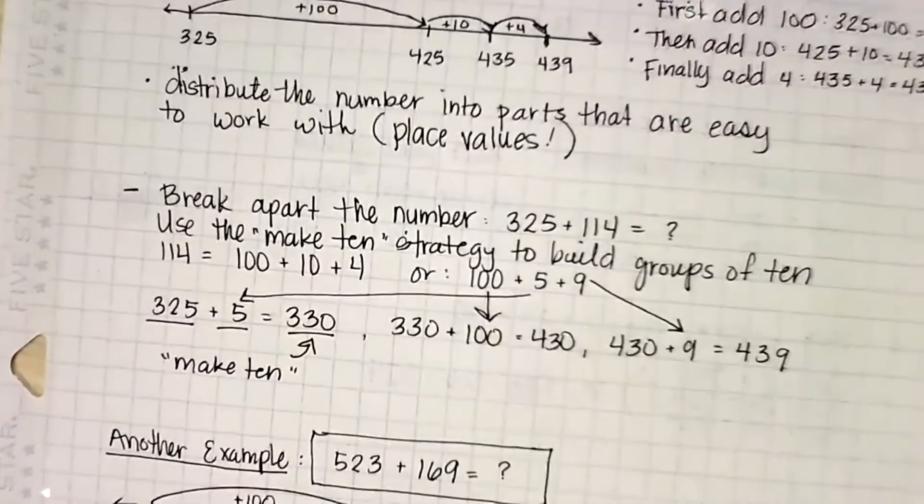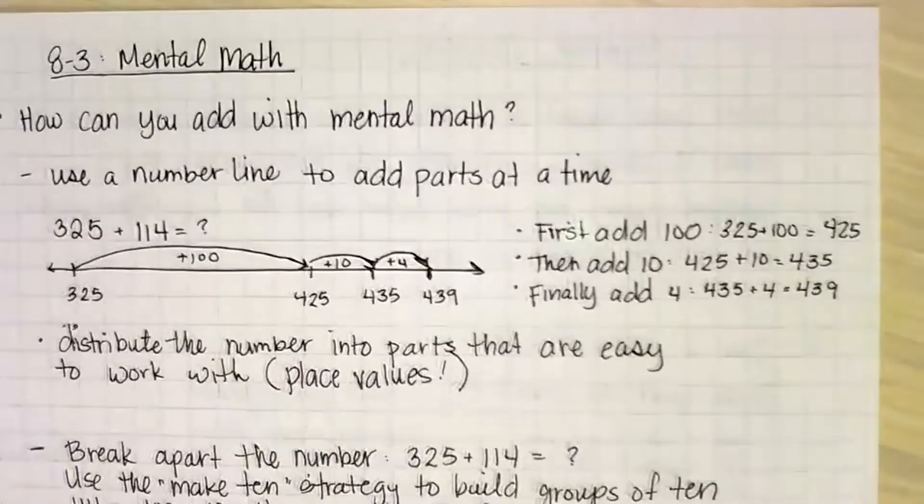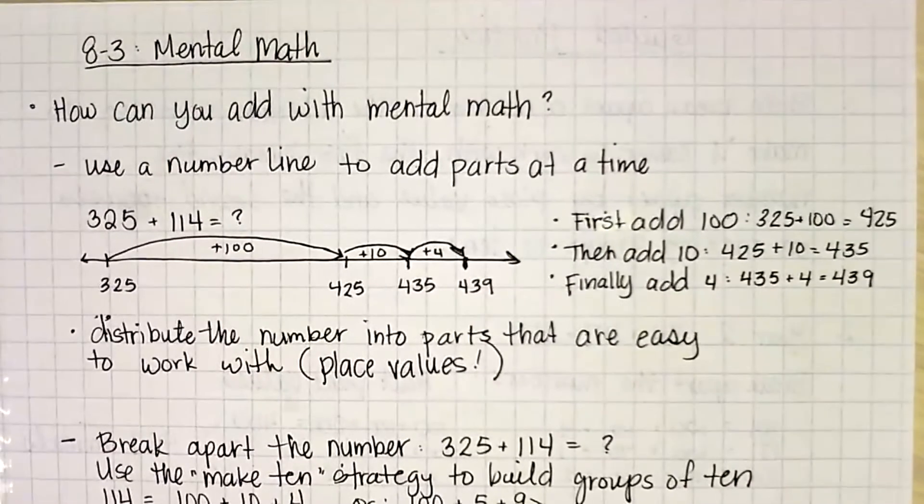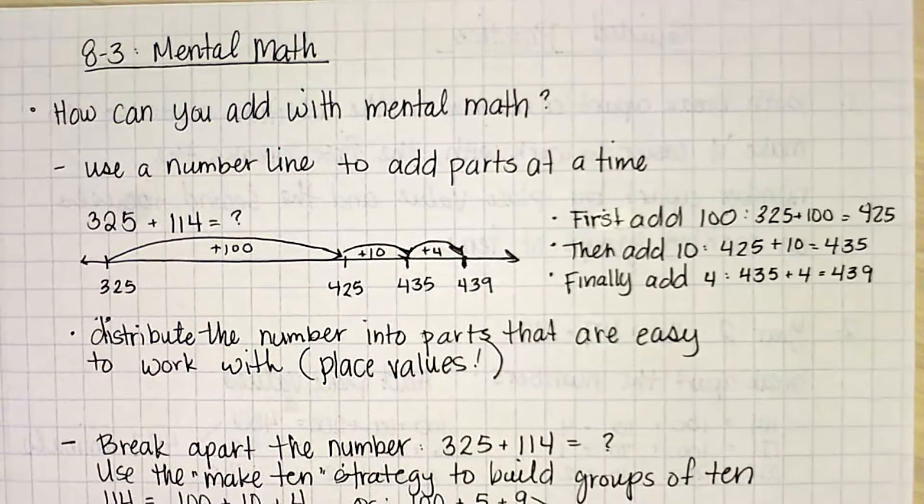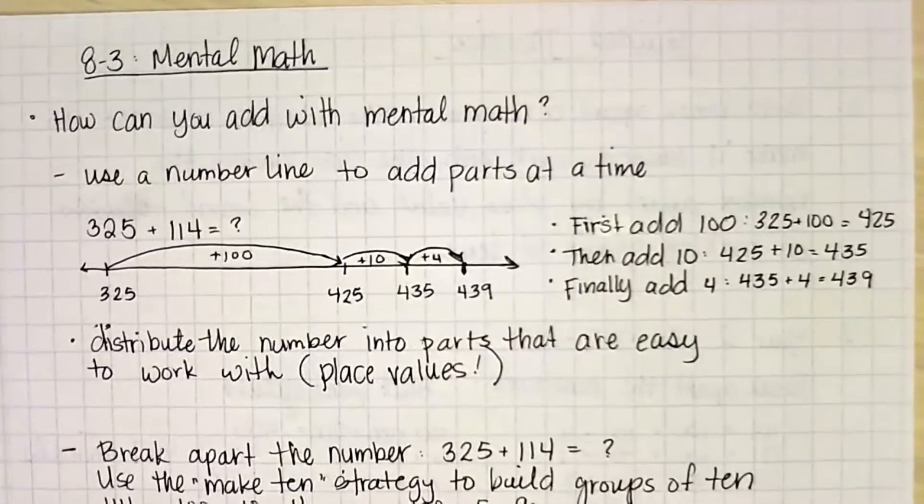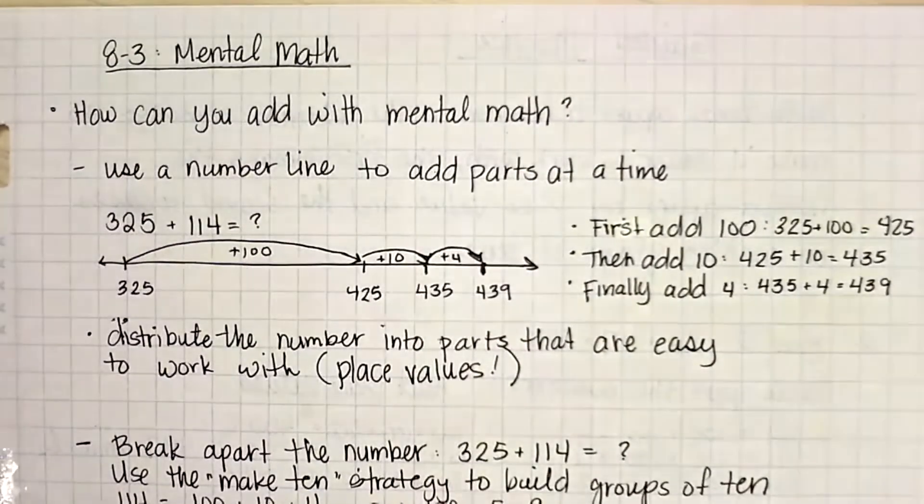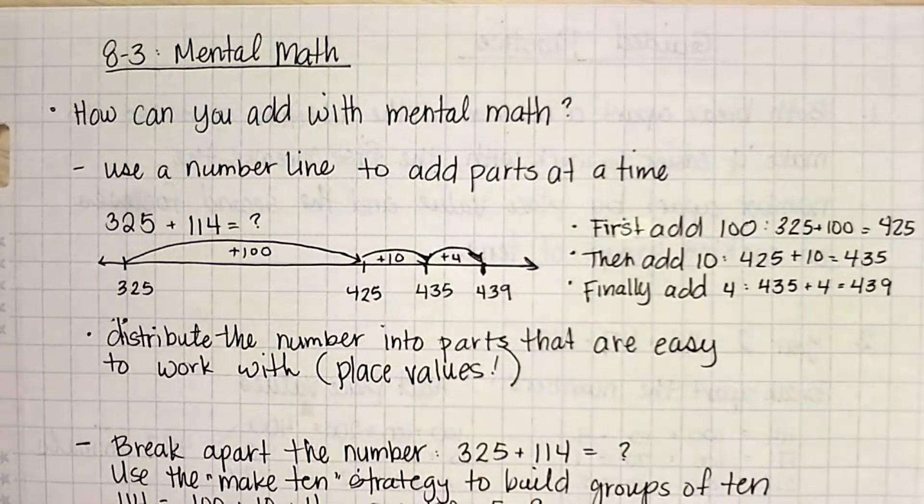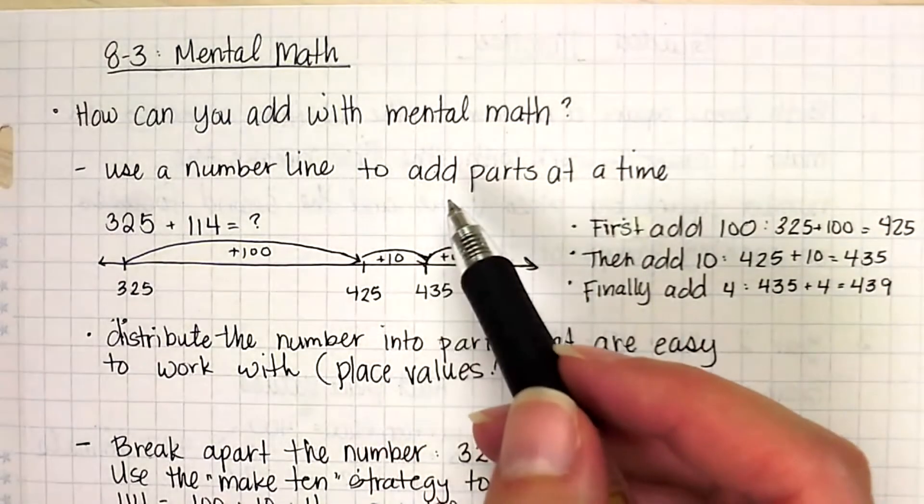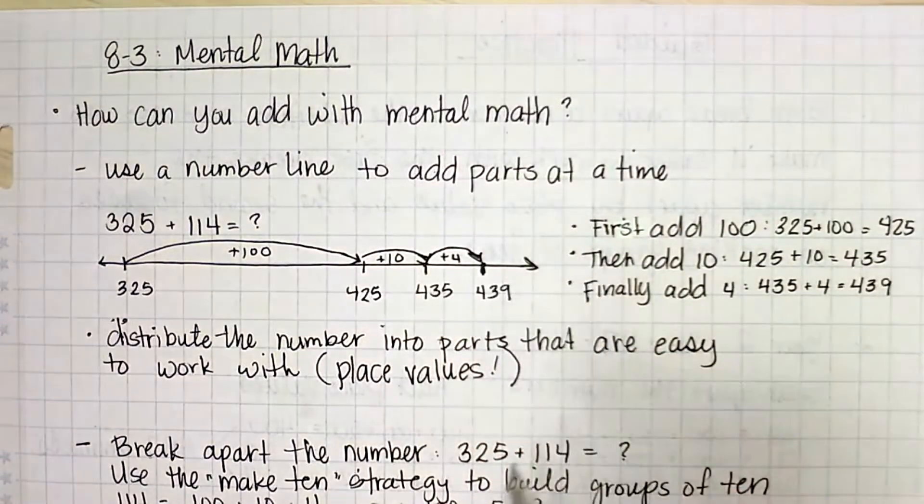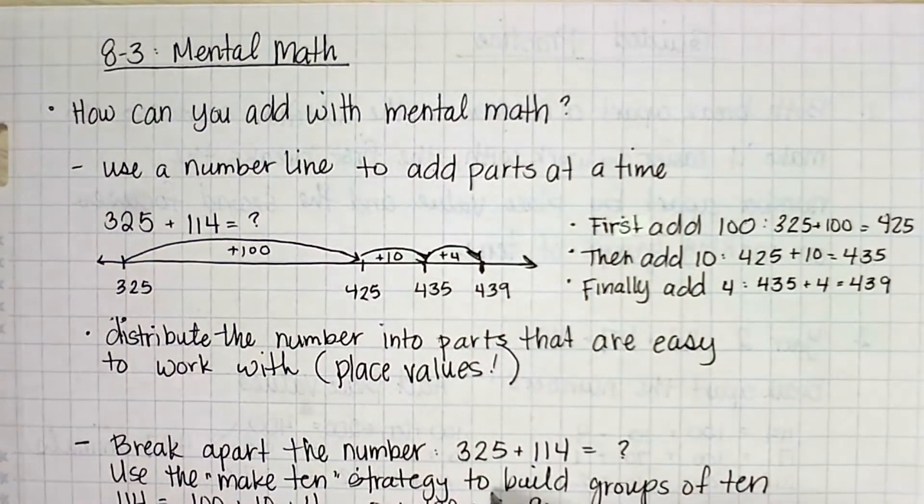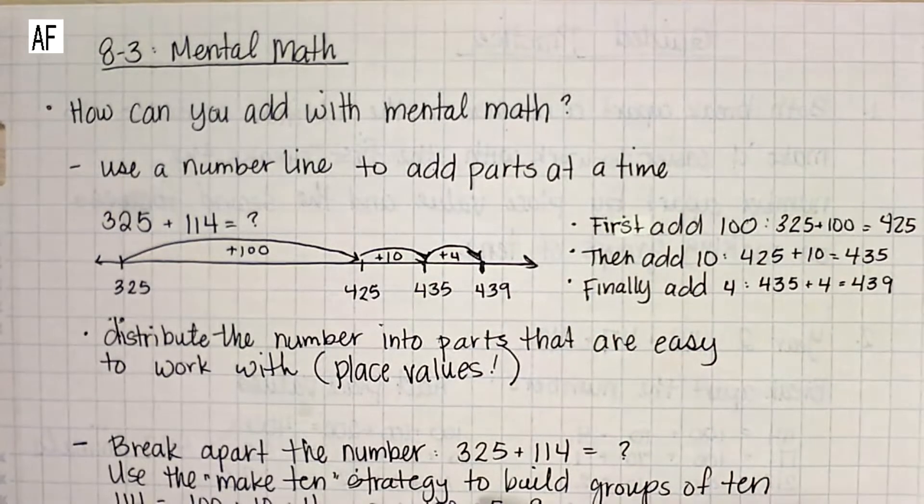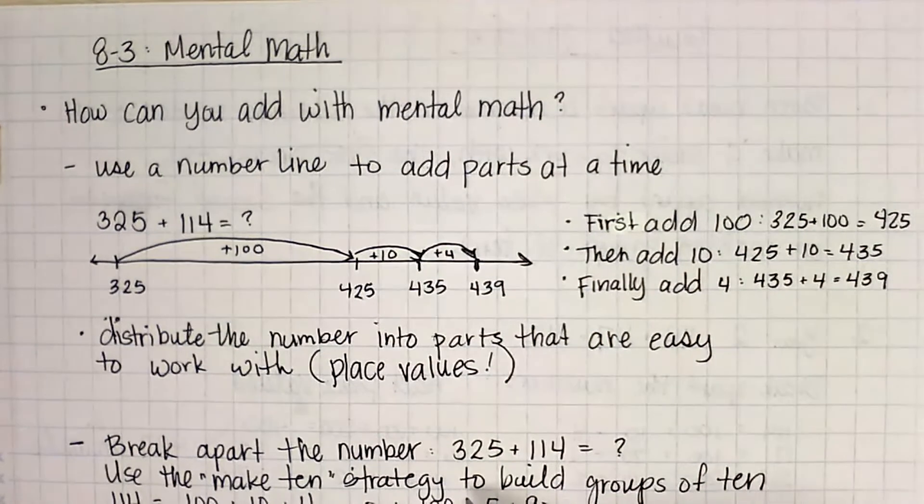Let's go ahead and hop into our notes and our guided practice together. So 8-3, mental math, we're focusing on addition in this lesson. So how can we add with mental math? That's our question for today. We can use a number line to add the parts, a small part at a time. Now, when we're using the number line strategy, what you're focused on here is adding place values.